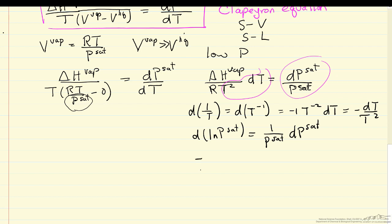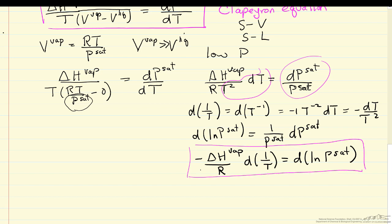those two substitutions, we end up with the heat of vaporization over R with a minus sign, and now the differential of one over T equals differential of the log of P_sat. Well this equation is known as the Clausius-Clapeyron equation.